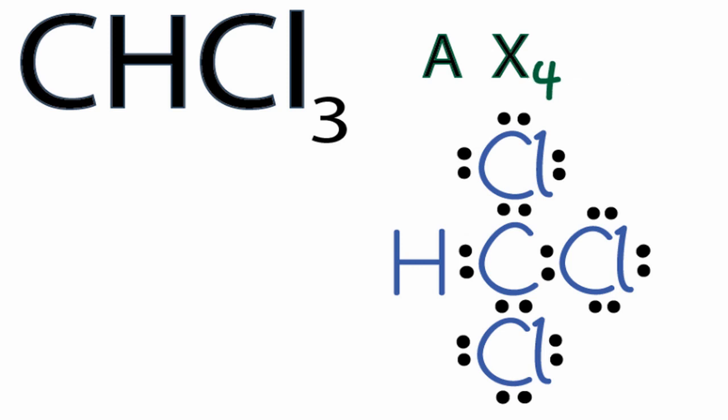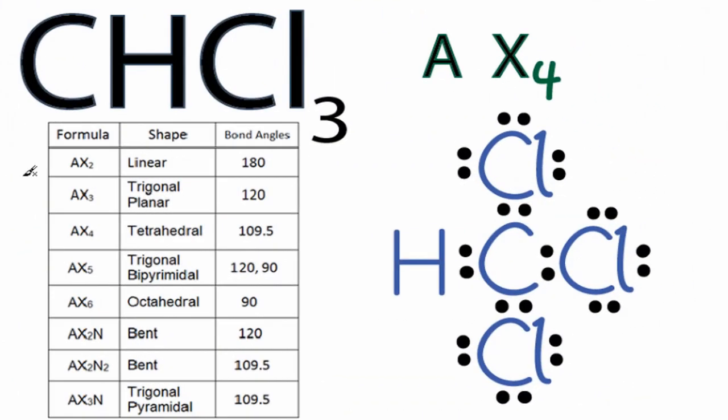So you could have memorized that AX4 is a tetrahedral molecular geometry. Or, if you're allowed, you can look it up on a table. So going down our table here, we see AX2, AX3, and AX4, which is tetrahedral and has bond angles of 109.5 degrees.